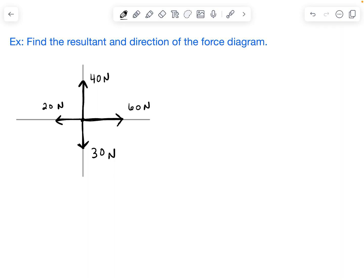So the example here is find the resultant and direction of the force diagram. We have 40 Newtons going north, 60 Newtons going east, 30 Newtons going south, and 20 Newtons going west.